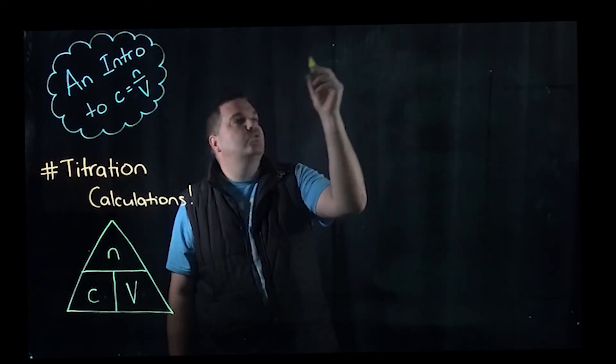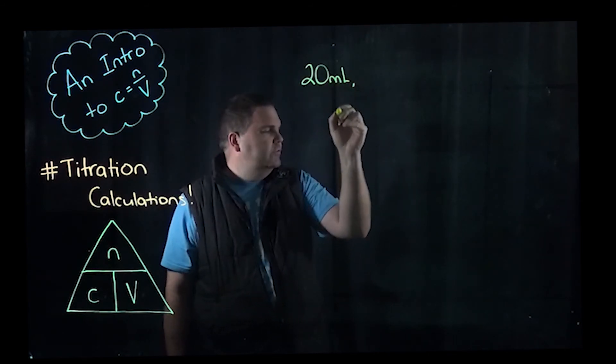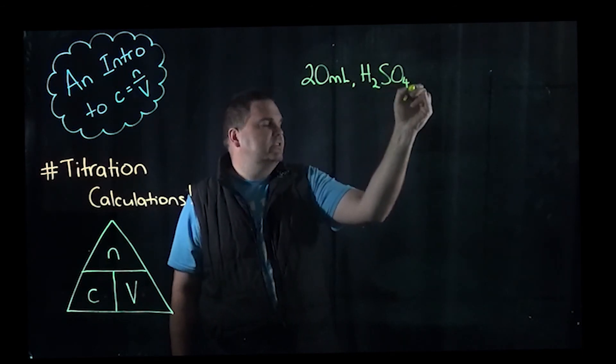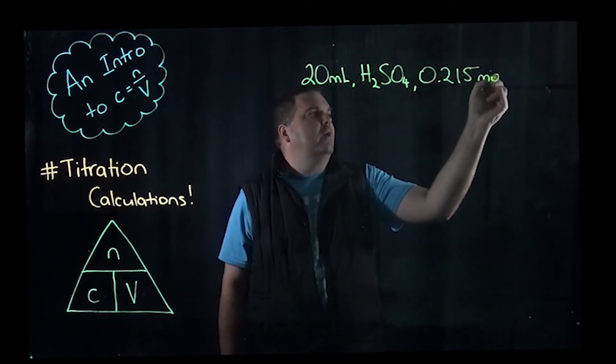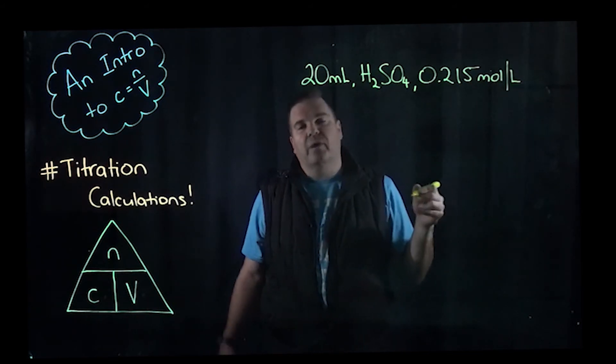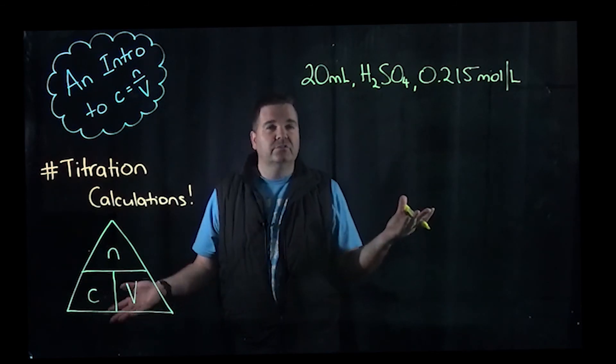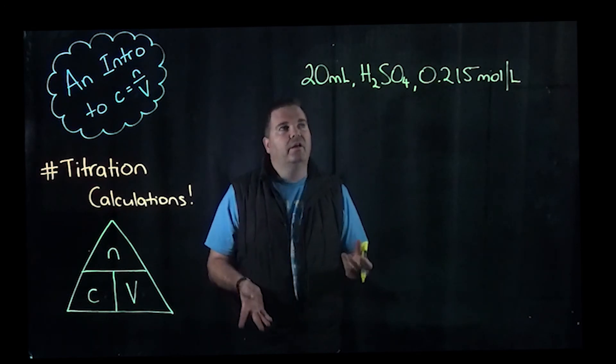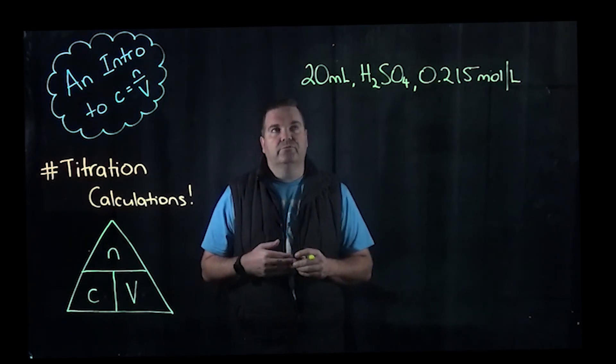So if we had 20 mils of sulfuric acid which has a concentration of 0.215 moles per litre, we might be using this as a standard solution, and we might be doing a titration with it to work out a concentration of something like sodium hydroxide. So we need to know how many moles we've actually added in to the reaction.